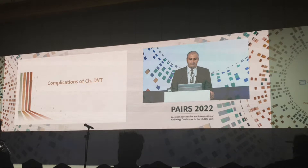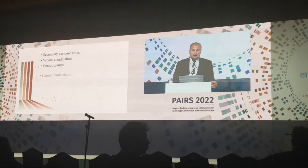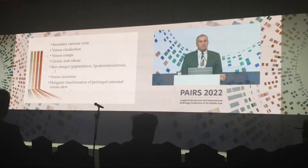What are the complications of chronic DVT? Secondary varicose veins, venous claudication, venous cramps, chronic venous edema, skin changes like pigmentation and lipodermatosclerosis, and venous ulcerations. For long-standing venous ulcerations, they may undergo malignant transformation.